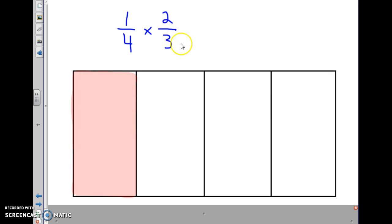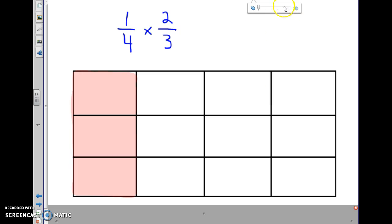But, I'm going to multiply 2 thirds. I want to know what 2 thirds of this 1 fourth is. So, I'm going to take it and I'm going to divide it into thirds. So, dividing that into thirds. You can see there's 3 rows now. And I'm going to shade how many of those rows? Correct. I'm going to shade 2 of those rows. Because, I'm looking at 2 thirds of it. Not 1 third of it. 2 thirds.